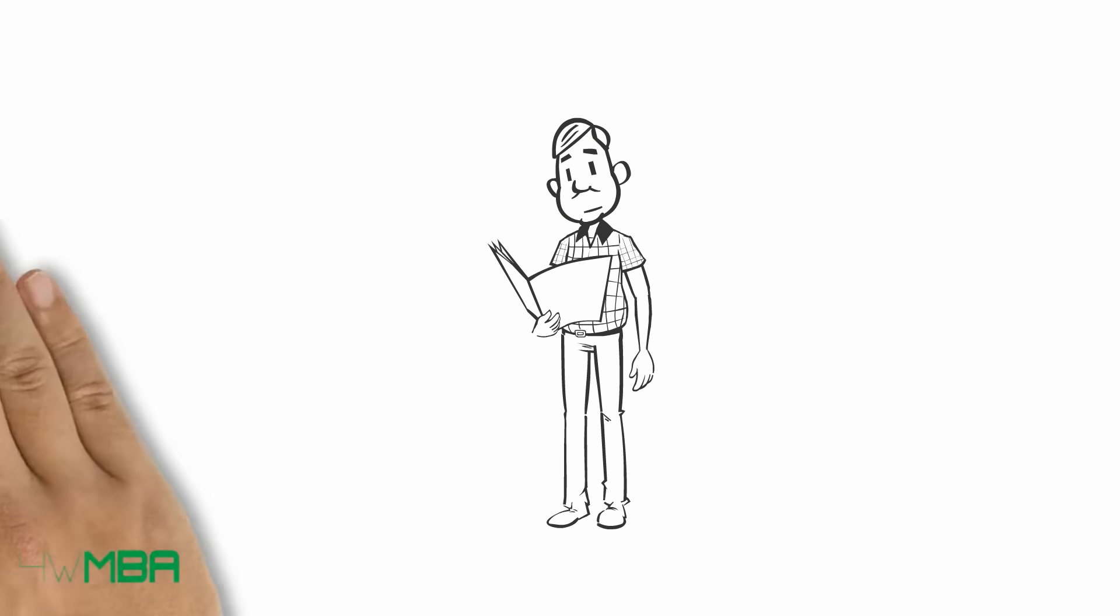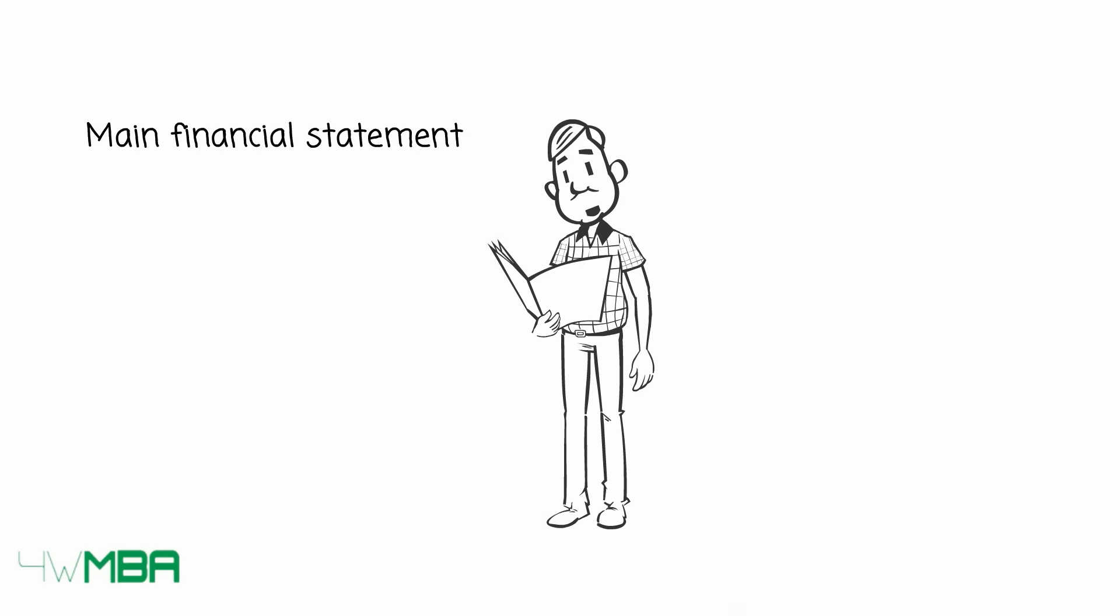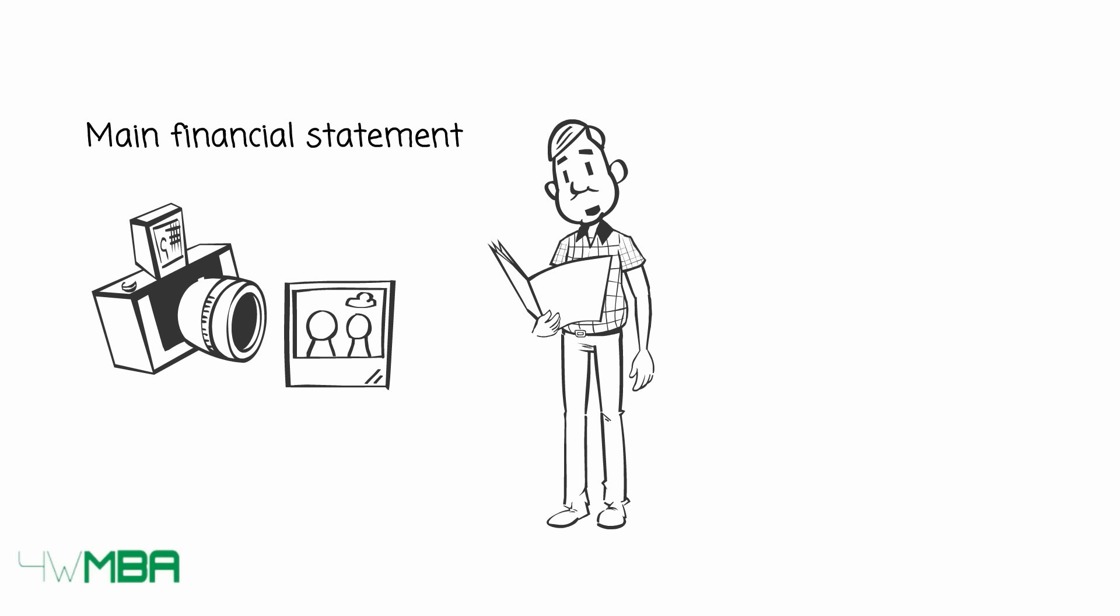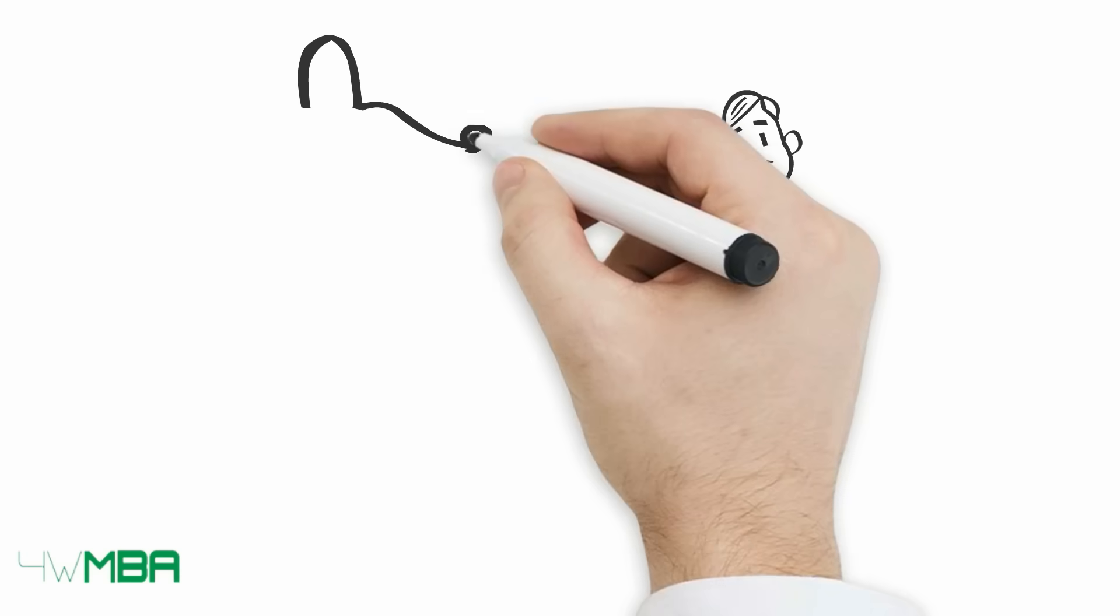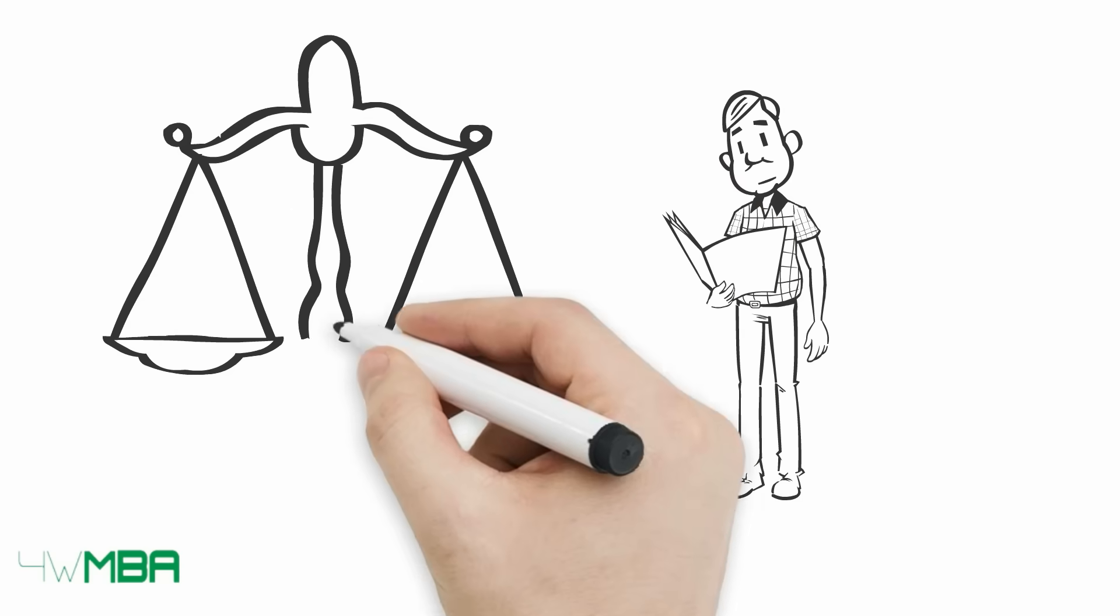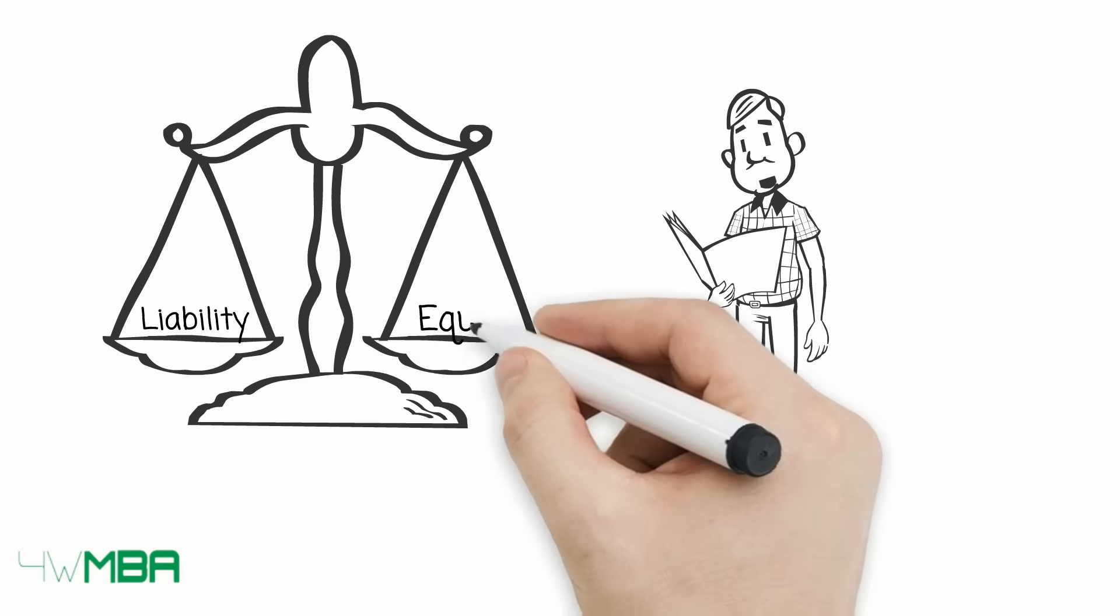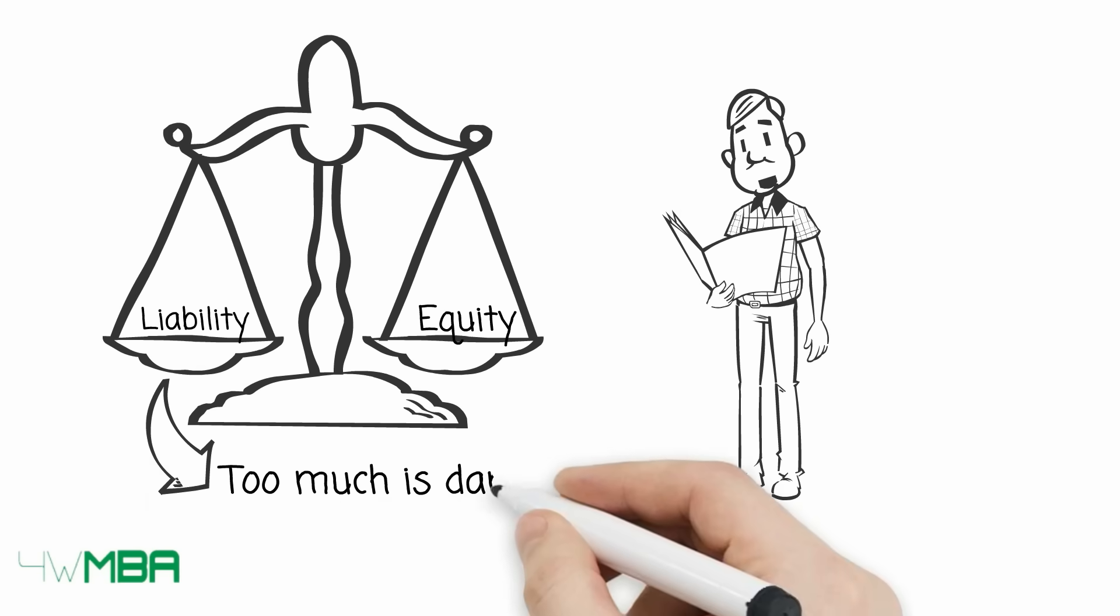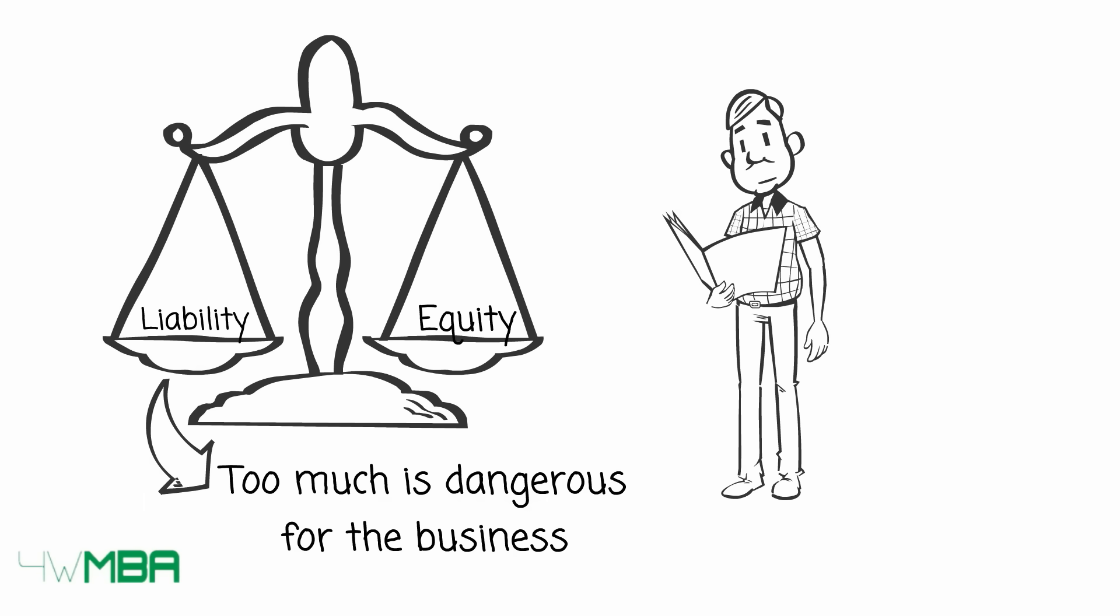In conclusion, the balance sheet is one of the main financial statements. It is like an instant picture and helps us assess how risky a business is. In fact, when a company is too indebted, you can see it from the balance sheet. If liabilities are too much in comparison to equity, this can be very dangerous for the business.